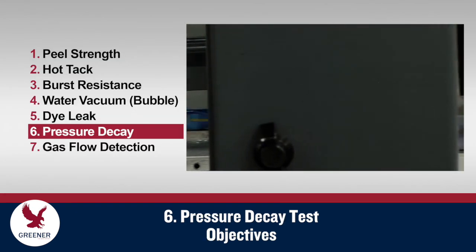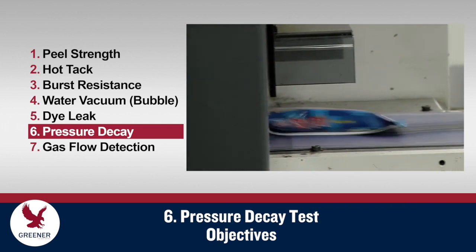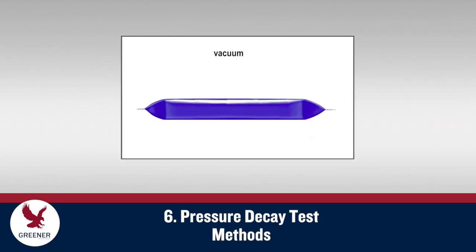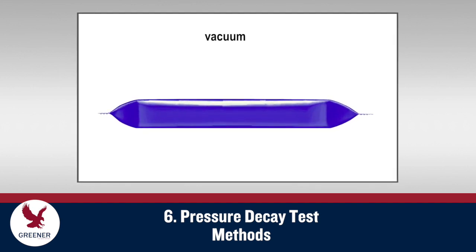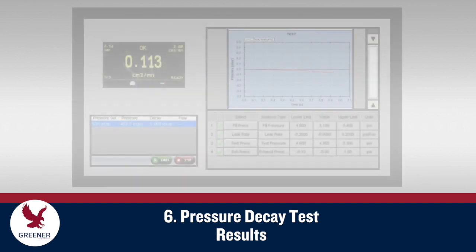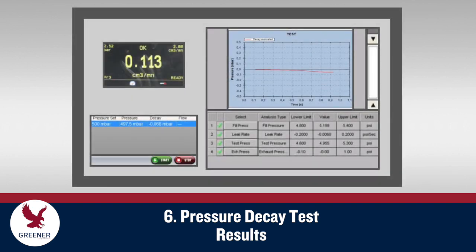Pressure decay tests measure both the presence and the magnitude of leaks. A package is inserted into a chamber where a vacuum is drawn that pressurizes the package. If leaks are present, air is forced from the package into the chamber and the vacuum pressure decays. Older pressure decay methods don't use a chamber or a vacuum, but instead inject air to achieve pressurization. Reductions in pressure indicate leaks, and the rate of reduction reflects the size and overall magnitude of the leaks.